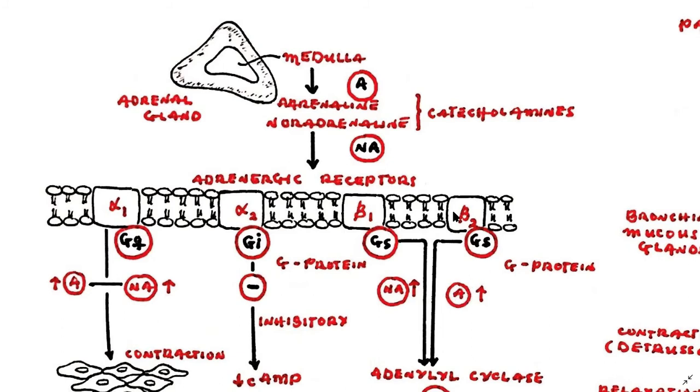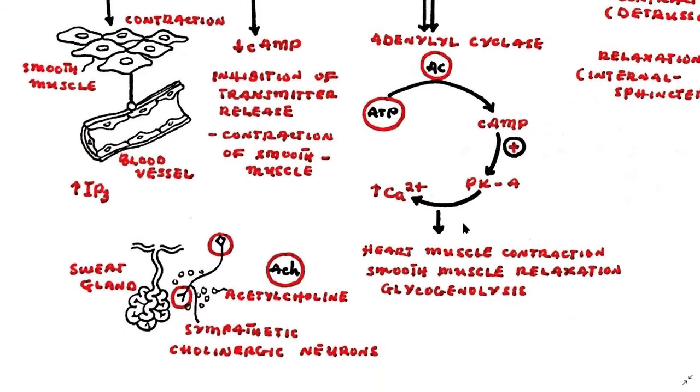Noradrenaline is more potent at beta-1 receptors, and adrenaline is more potent at beta-2 receptors. A few sympathetic neurons release acetylcholine at the effector site, for example the sweat glands. These neurons are known as the sympathetic cholinergic neurons.